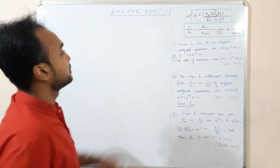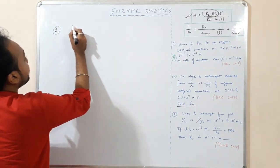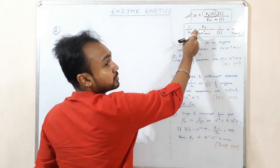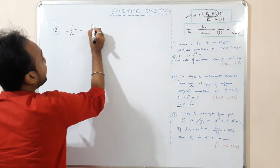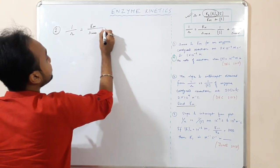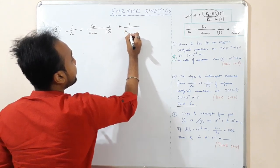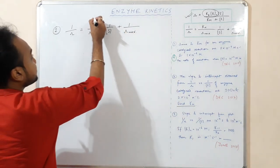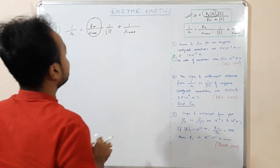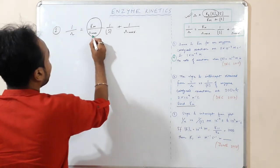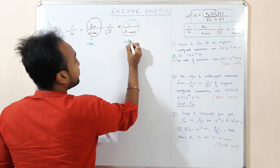We use the Lineweaver-Burk double reciprocal plot formula: 1/R = (Km/Rmax)·(1/S) + 1/Rmax. Here, Km/Rmax is the slope and 1/Rmax is the intercept.